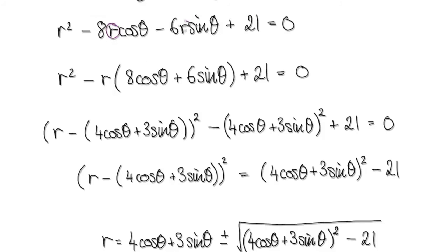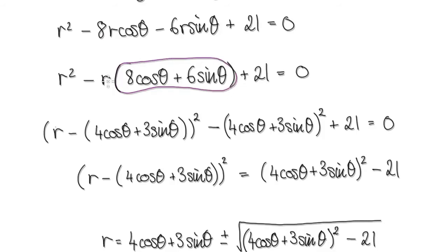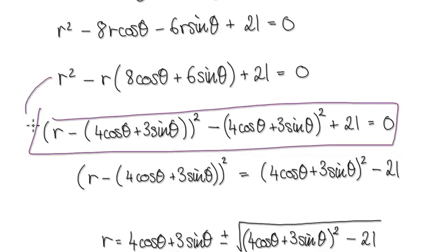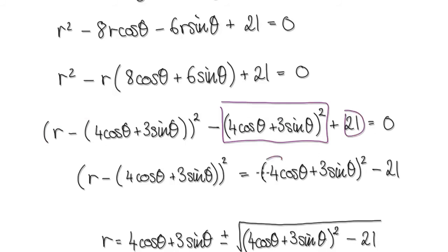Let's factor out the r from the middle terms first, giving r² - r(8 cosθ + 6 sinθ) - 21 = 0. Now complete the square — this is really high school work. Imagine the bracket as a constant. Completing the square gives (r - (4 cosθ + 3 sinθ))² - (4 cosθ + 3 sinθ)² - 21 = 0. Rearranging to make r the subject: (r - (4 cosθ + 3 sinθ))² = (4 cosθ + 3 sinθ)² + 21.